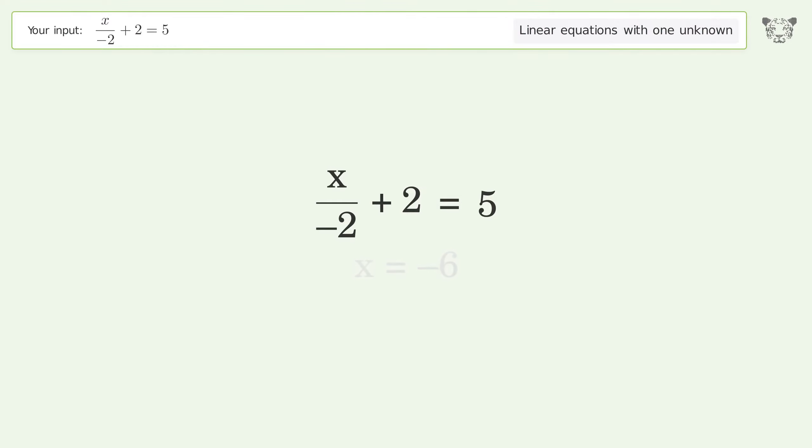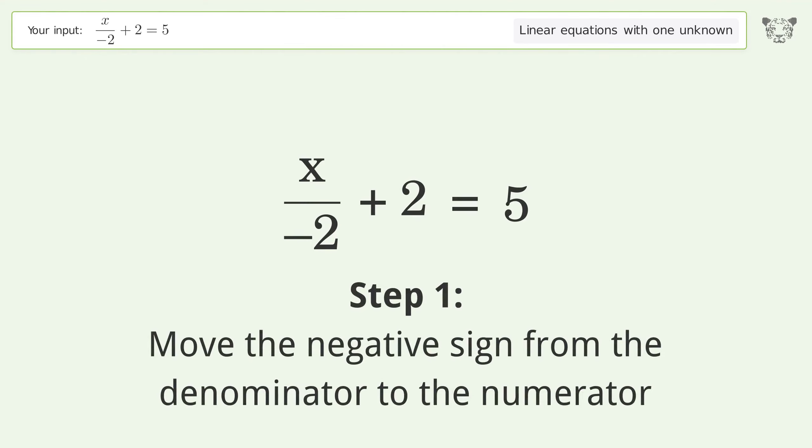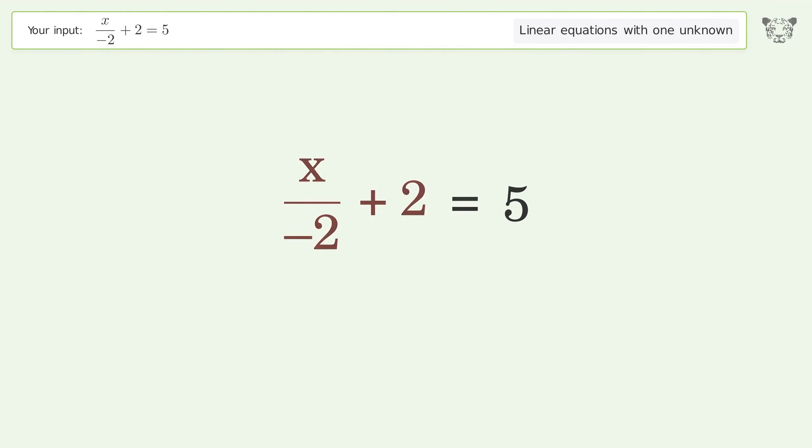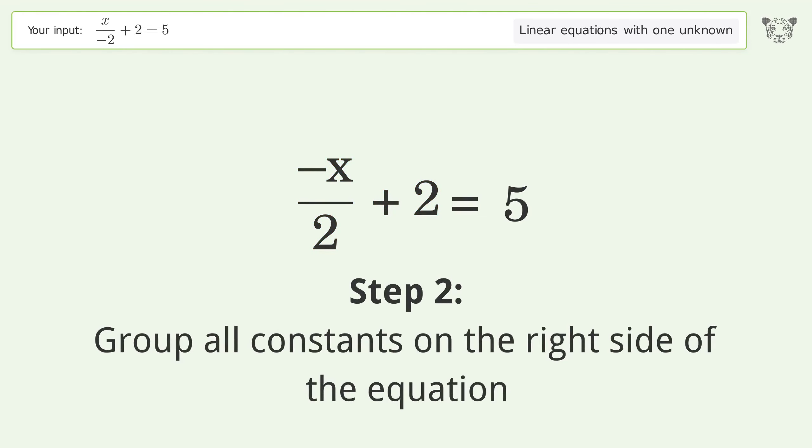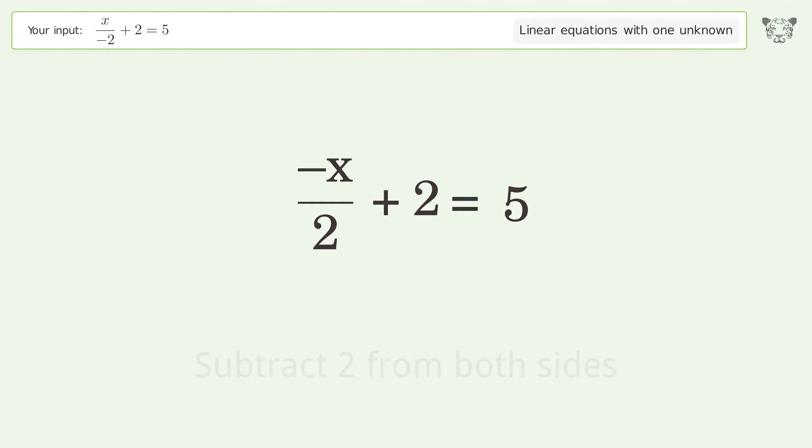Let's solve it step by step. Move the negative sign from the denominator to the numerator. Group all constants on the right side of the equation. Subtract 2 from both sides. Simplify the arithmetic.